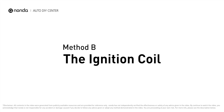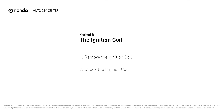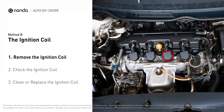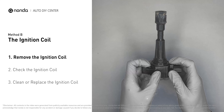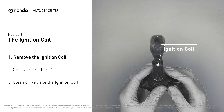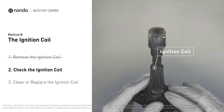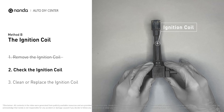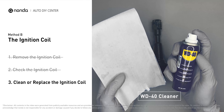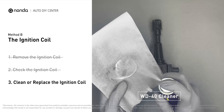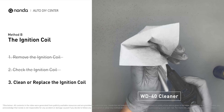Method B: the ignition coil. Ignition coils are usually installed directly at the cylinder head above the spark plug. First, carefully remove the ignition coil from the engine. Check to see if the ignition coil is either stained or damaged. If the ignition coil is covered with engine oil or stains, simply clean it with a WD-40 cleaner.